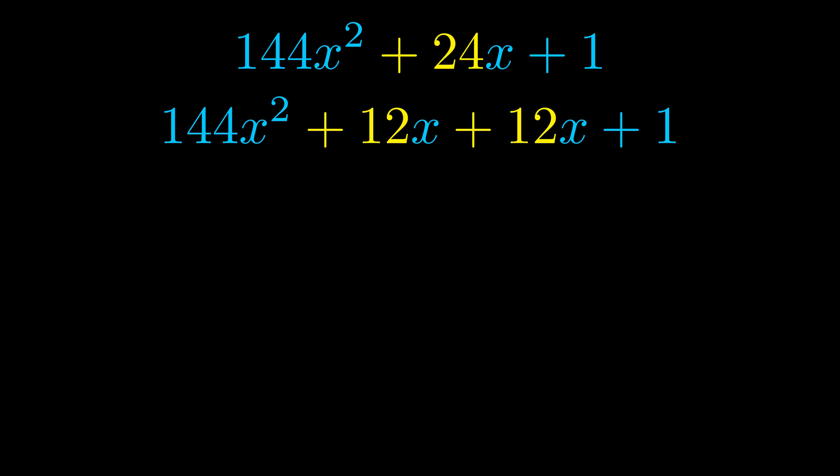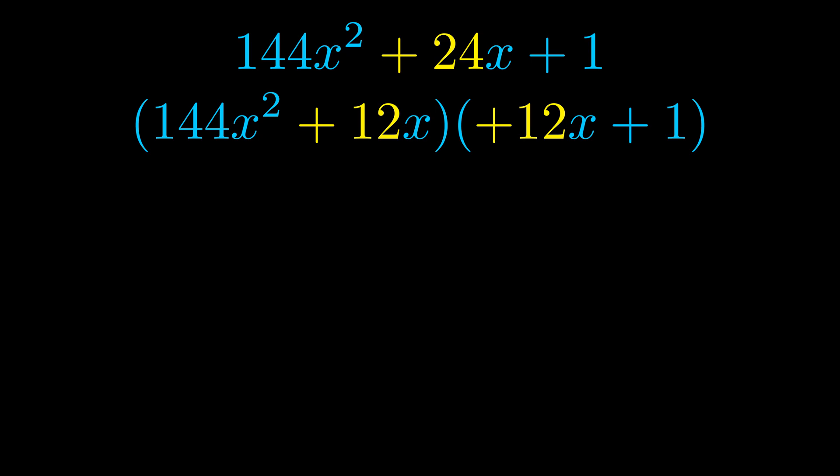Once we've done this, we go ahead and put parentheses around the first term and the last term. And we do that so that we can take the greatest common factor out of both terms. We can see the greatest common factor is now outside in green.